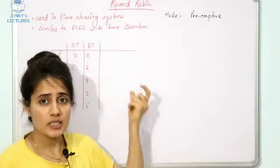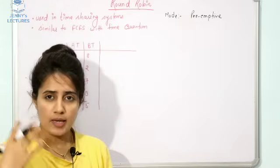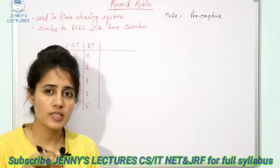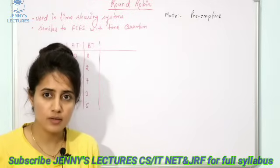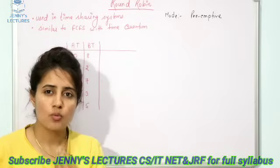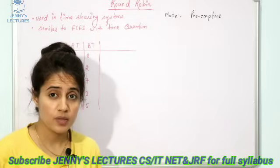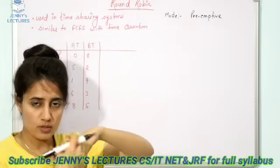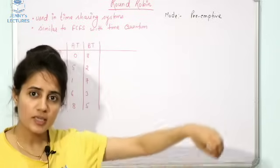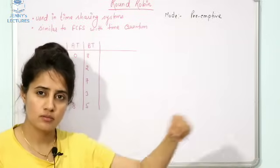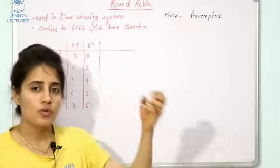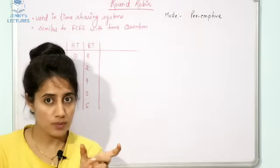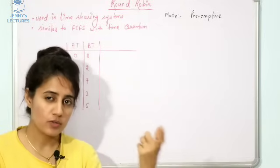The time quantum is the period of time for which a process is allowed to run uninterrupted in a preemptive multitasking operating system — in one go. In this case, it's not like we pick one process based on arrival time or burst time and complete it entirely. The criteria here is arrival time plus time quantum.